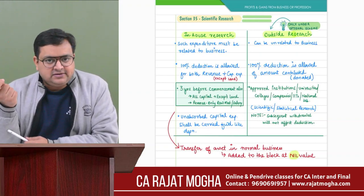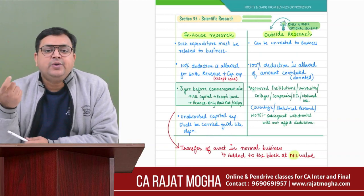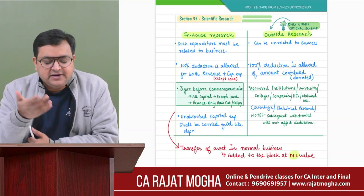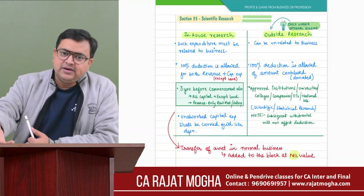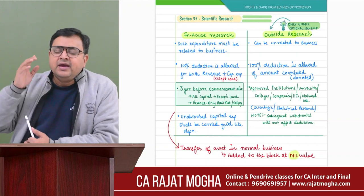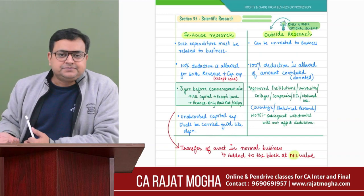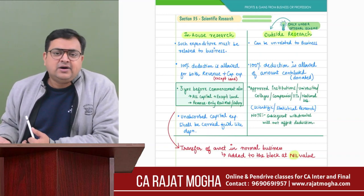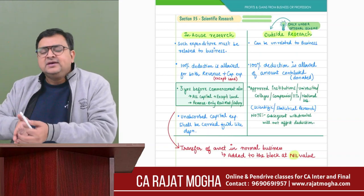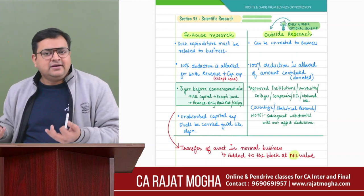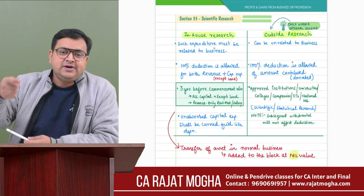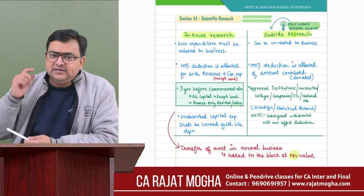When the scientific research asset is transferred to normal business, it is added to the relevant block at nil value. If subsequently sold, it is treated in the same manner as any part of the block of assets being sold. However, if you have not transferred it to normal business and are directly selling the asset, a number line approach is used to determine how much is PGBP income and how much is capital gain.